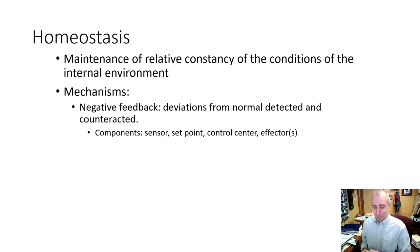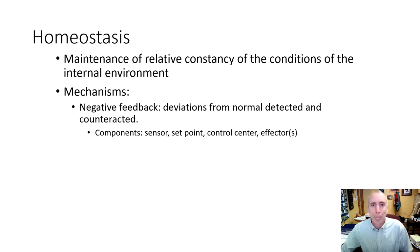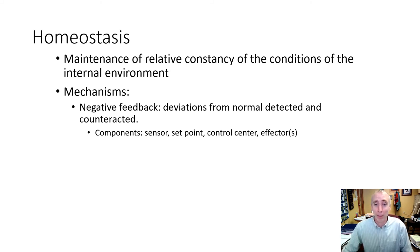Just three more slides — we're almost done. Homeostasis: we talked about this the first day of class. It is a characteristic of living things — the maintenance of relative constancy of the conditions of the internal environment. 'Relative' means there's a range; body temperature at 98.6 degrees Fahrenheit is a classic example of homeostasis.